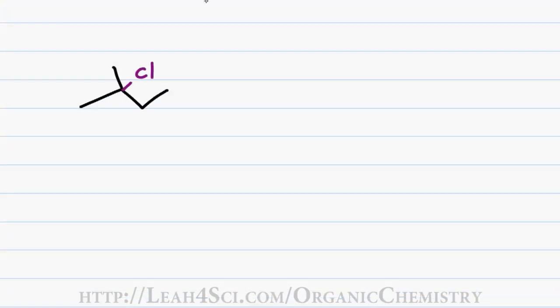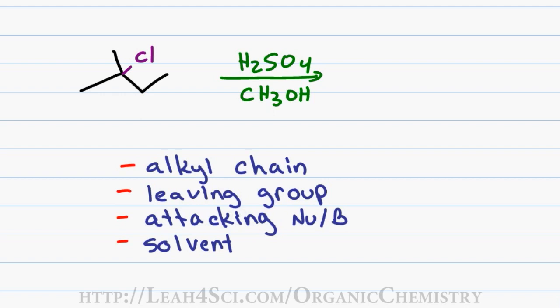For our next example, we'll analyze what happens when 2-chloro-2-methylbutane is dissolved in methanol in the presence of H2SO4. Looking at the alkyl chain, the leaving group is attached to a tertiary carbon which means a carbocation would be very stable and therefore we can have a one type reaction. Chlorine as a halogen is a good leaving group because the charge will be distributed over the large halide in solution.